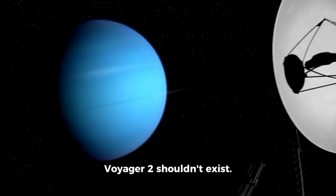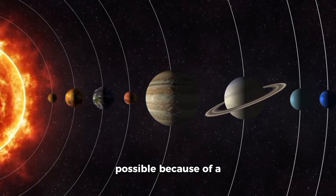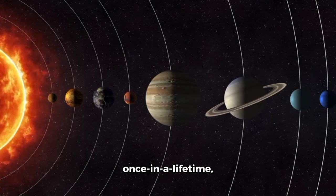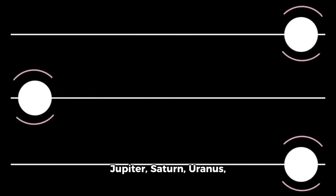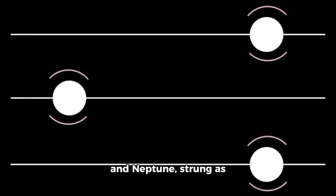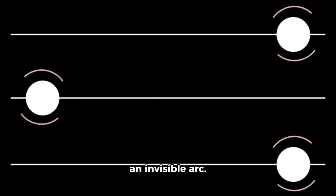Voyager 2 shouldn't exist. Its journey was only possible because of a once-in-a-lifetime, 176-year alignment of the planets. Jupiter, Saturn, Uranus, and Neptune strung as if they were pearls on an invisible arc.